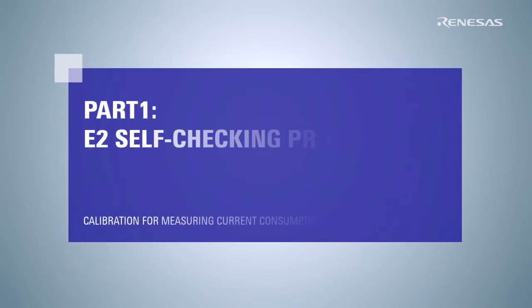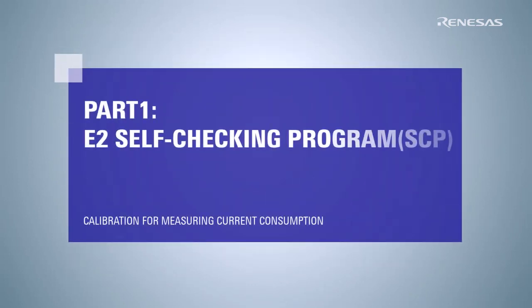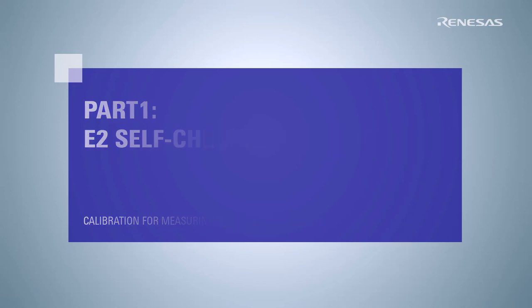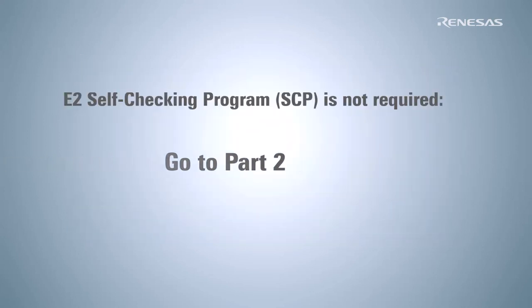When using the E2 emulator for the first time, be sure to run the self-check program to correct the current consumption measurement error. If the E2 emulator has already executed the self-check program, it is unnecessary to re-execute. In that case, please go to Part 2.